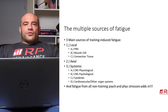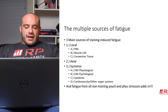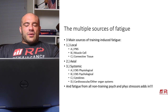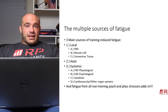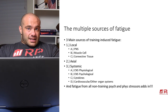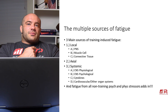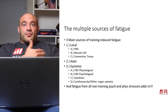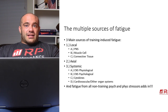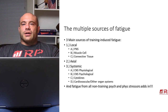There are three main sources of fatigue relevant to training. Number one is local fatigue, which involves the peripheral nervous system — the nerve that communicates from the spinal cord to the muscle and back — and the muscle cell itself, which does the force generation, plus the connective tissue around the muscle cell. Basically, the muscle and the nerve that talks to it constitute the local fatigue system.